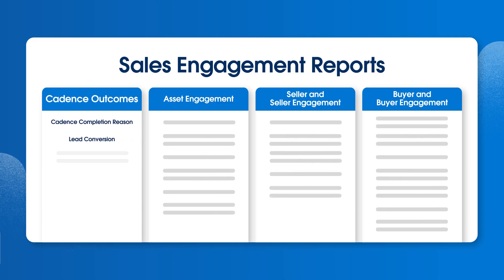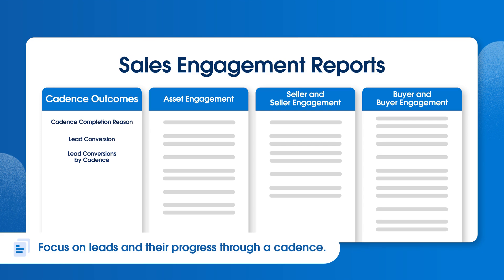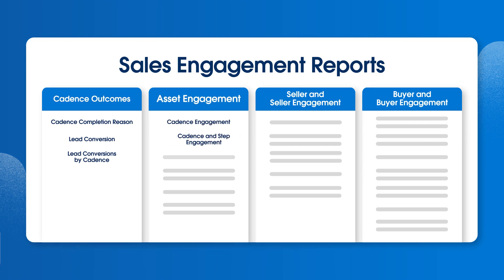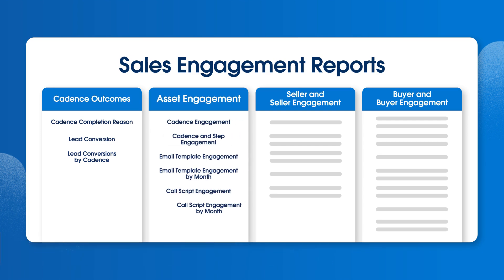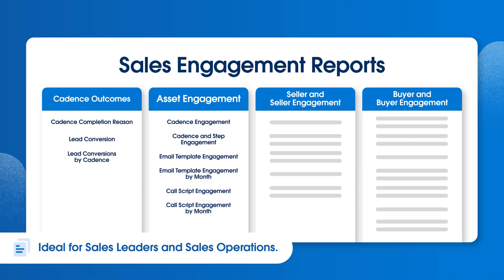Cadence outcomes reports are great for identifying cadence outcomes and return on investment for sales leaders and sales operations. They focus on leads and their progress through a cadence. Asset engagement reports help measure cadence engagement and email success, focusing on cadence assets such as email templates and call scripts. They are ideal for sales leaders and sales operations.